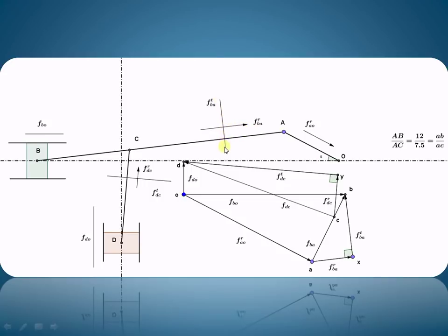Tangential acceleration is perpendicular to the link, so it is perpendicular to the radial acceleration. Point C can be obtained by ratio and proportion. For example, AB upon AC on the space diagram — AB is 12 cm and AC is 7.5 cm — equals AB upon AC on the acceleration diagram. So if we know AB on the acceleration diagram, we can easily find distance AC and locate point C.